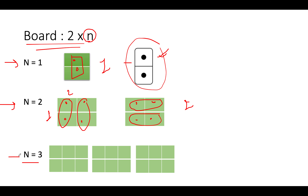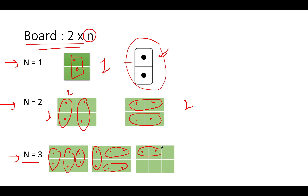Now let's take n=3. Using only domino tiles: the first approach is to place all three domino tiles vertically. The second approach is to place one domino tile vertically in the first column, then two domino tiles horizontally in the remaining space. The third approach mirrors this by placing two horizontal dominoes first, then one vertical domino in the last column. So there are 3 possible ways using only the domino tile.